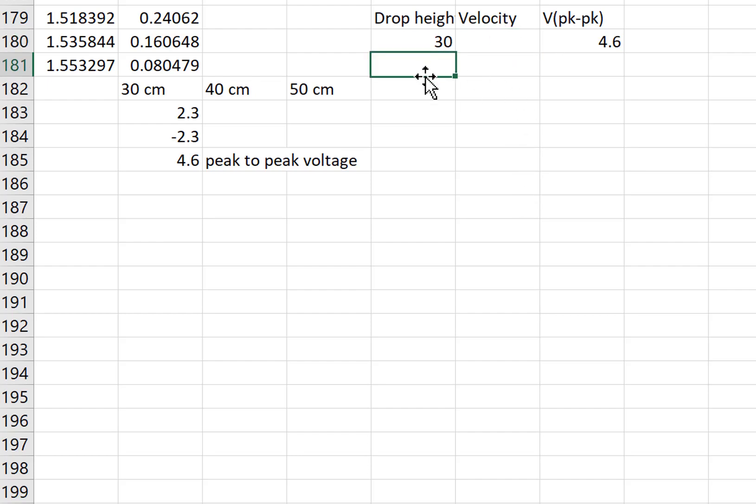Then I would do the same thing for the other drop heights, putting in the velocity, finding the velocity and finding the peak to peak voltage. Then I create a graph with velocity on the horizontal axis and peak to peak voltage on the vertical axis. I'd see if I get a linear relationship, put a linear fit and see what the coefficient is.